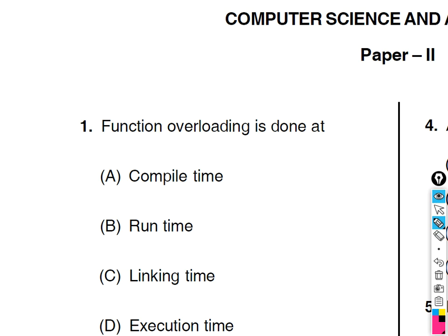First question: function overloading is done at compile time. Function overriding is done at run time. Function overloading means in the same class there will be two different functions which vary either in the number of parameters or in the type of parameters. Function overriding means the functions reside in two different classes — one in the super class and another in the subclass — with the same function name, and which function to execute is decided at run time. So the answer is: function overloading is done at compile time.